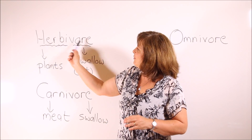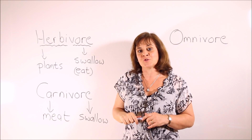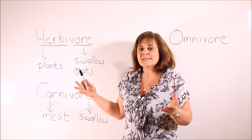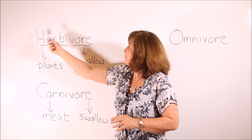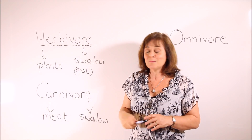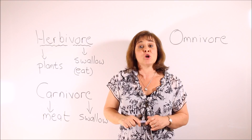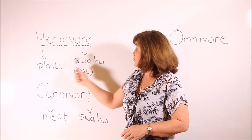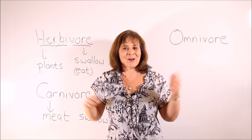Our first three words are herbivore, carnivore, and omnivore. So herbivore: the 'vore' part of the word comes from a Latin root that means to swallow — basically to eat — and 'herbi' comes from a Latin word that means plant. So a herbivore is an animal that swallows plants, a plant eater.